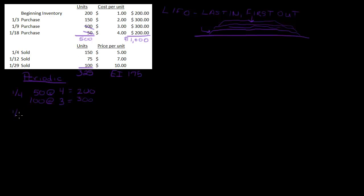On 1-12, I sold 75 units. Remember, those earlier units are all used up. So now I need 75 units from here. I'm going to take 75 at $2 each, which equals $150. Now half of those are gone, leaving 75 left.